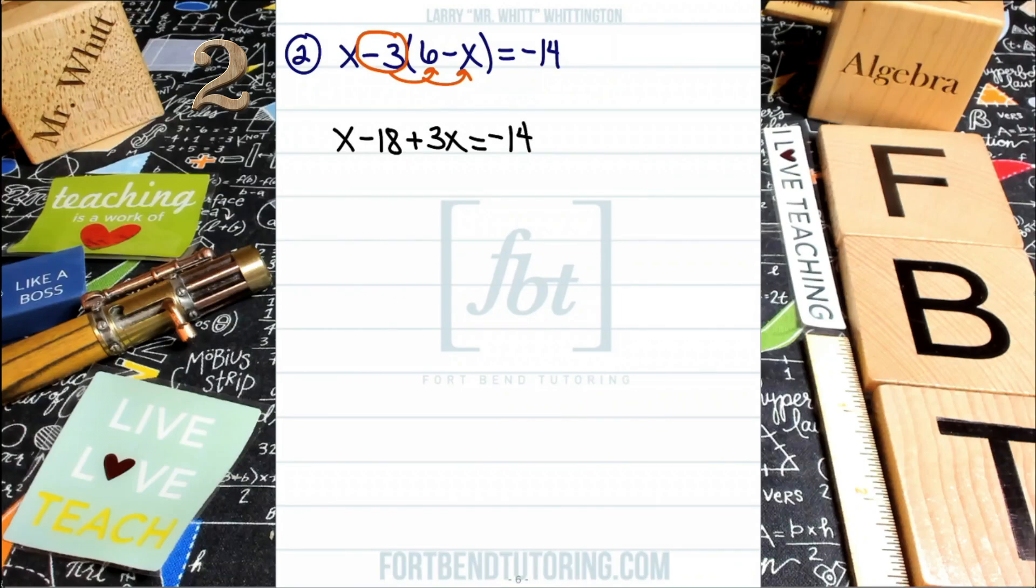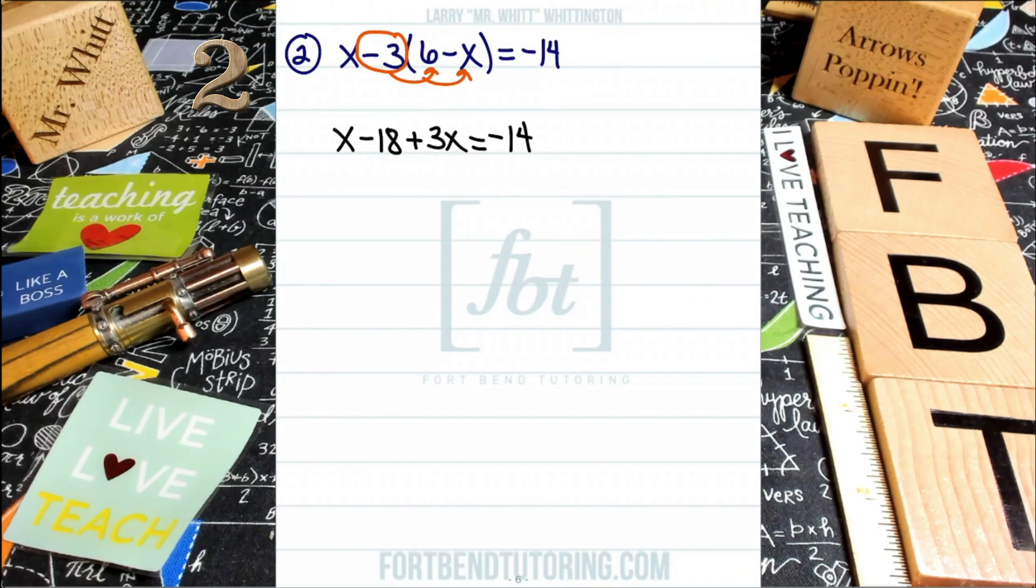So now on the left side, we end up with x minus 18 plus 3x. After doing my favorite property and getting those arrows popping, people, that's exactly what we did. We got our arrows popping. And now we're going to be looking for like terms.